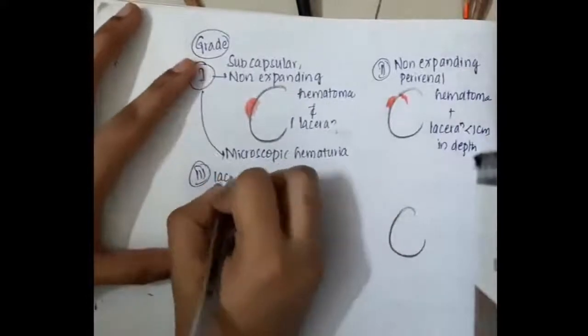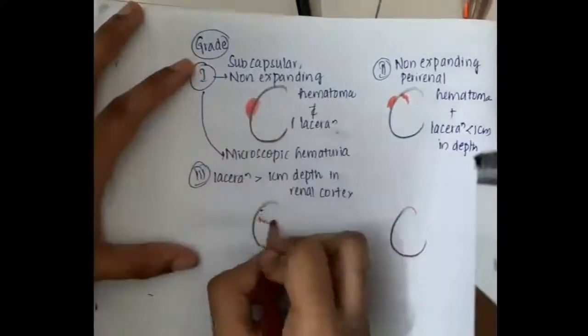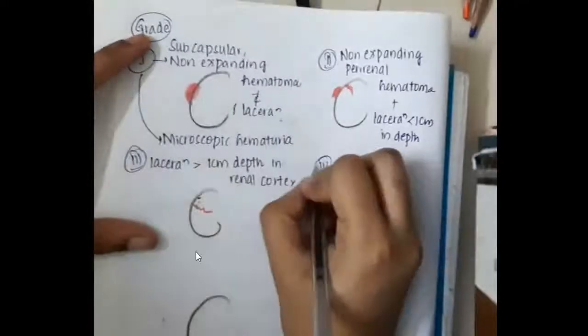Then in grade 3, we see laceration more than 1 centimeter depth in renal cortex. This is the grade 3, where laceration more than 1 centimeter depth.